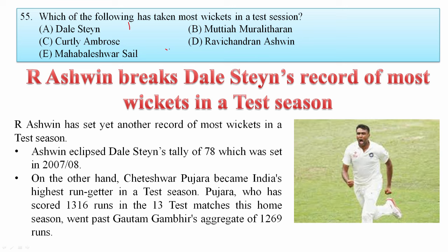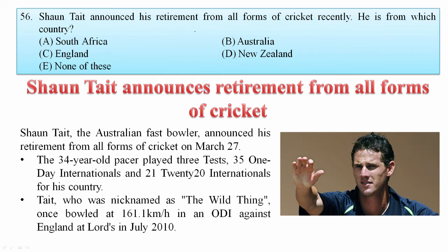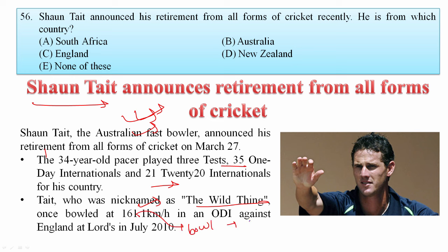Sean Tait announced his retirement from all forms of cricket. He is from Australia — a fast bowler who played 35 ODIs and 21 T20Is, nicknamed 'The Wild Thing' because he bowled at 161.16 km/h in an ODI against England at Lord's in July 2010. This is the second highest speed ever bowled in cricket — first is Shoaib Akhtar at 161.3 km/h, and joint second with Brett Lee at 161.1 km/h. Your answer is Australia.